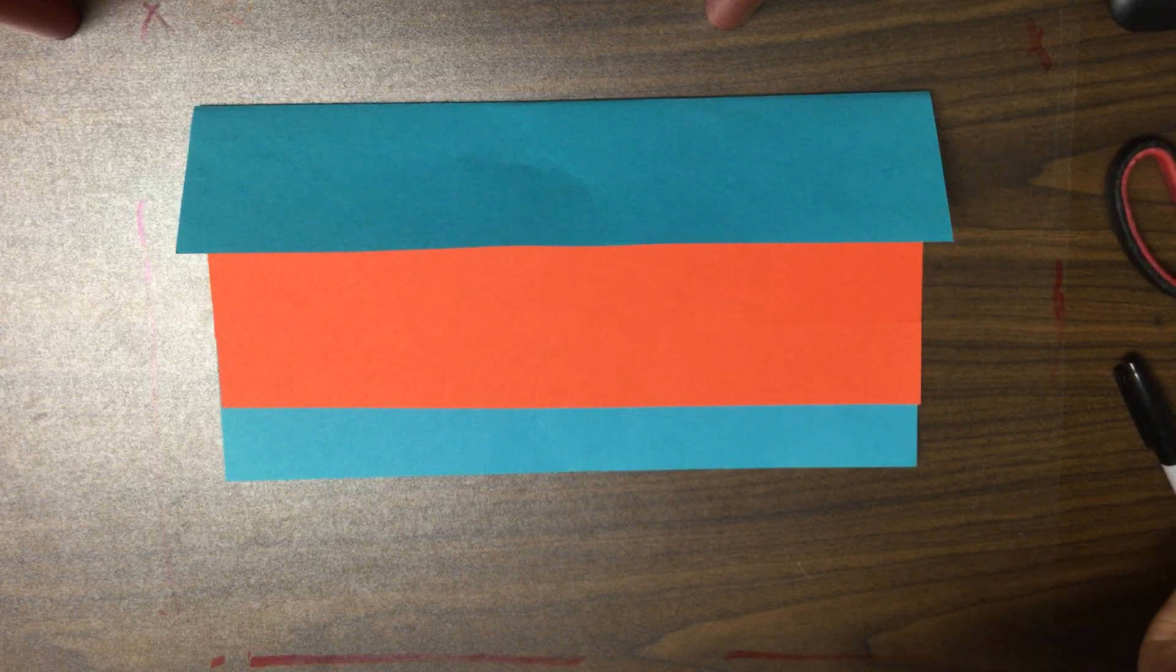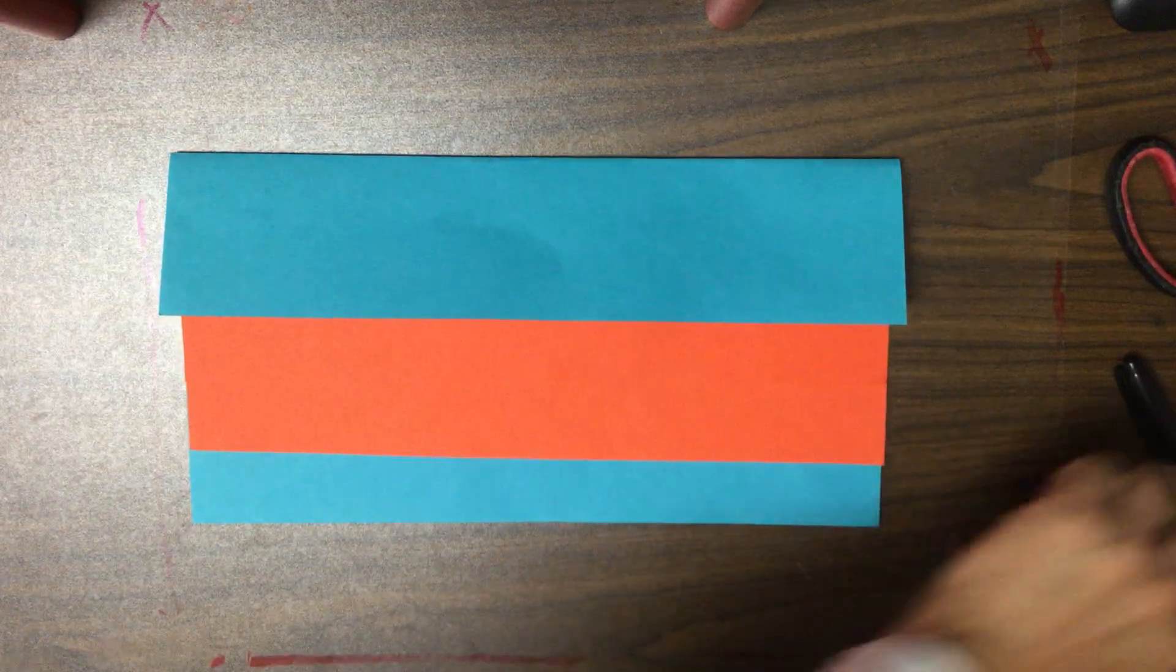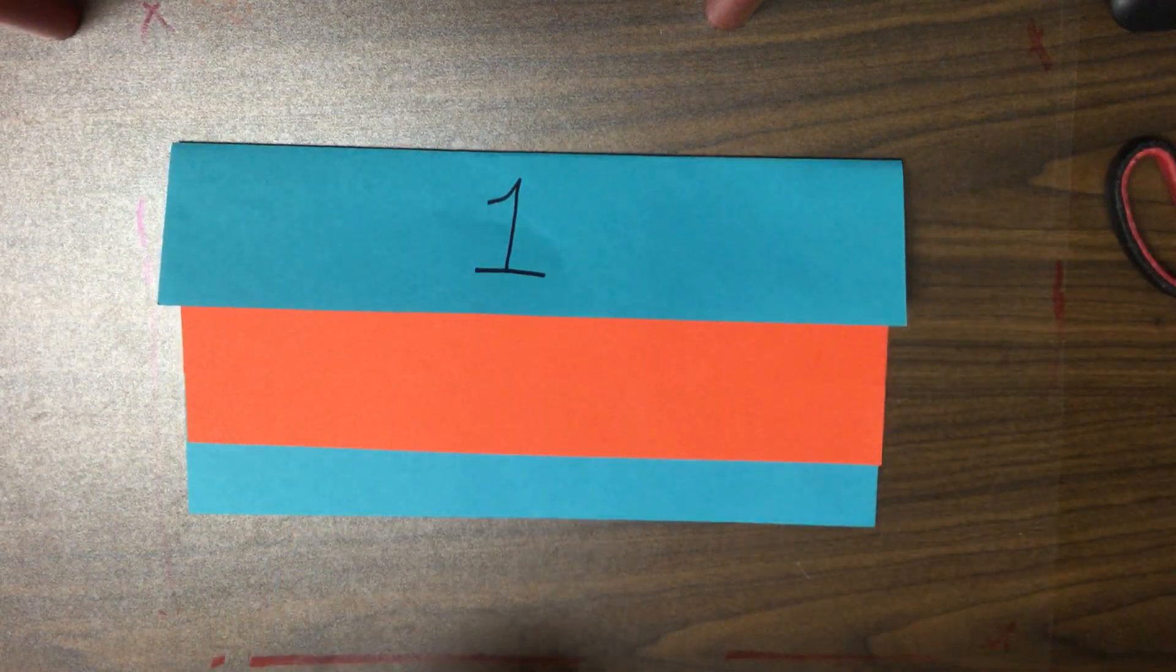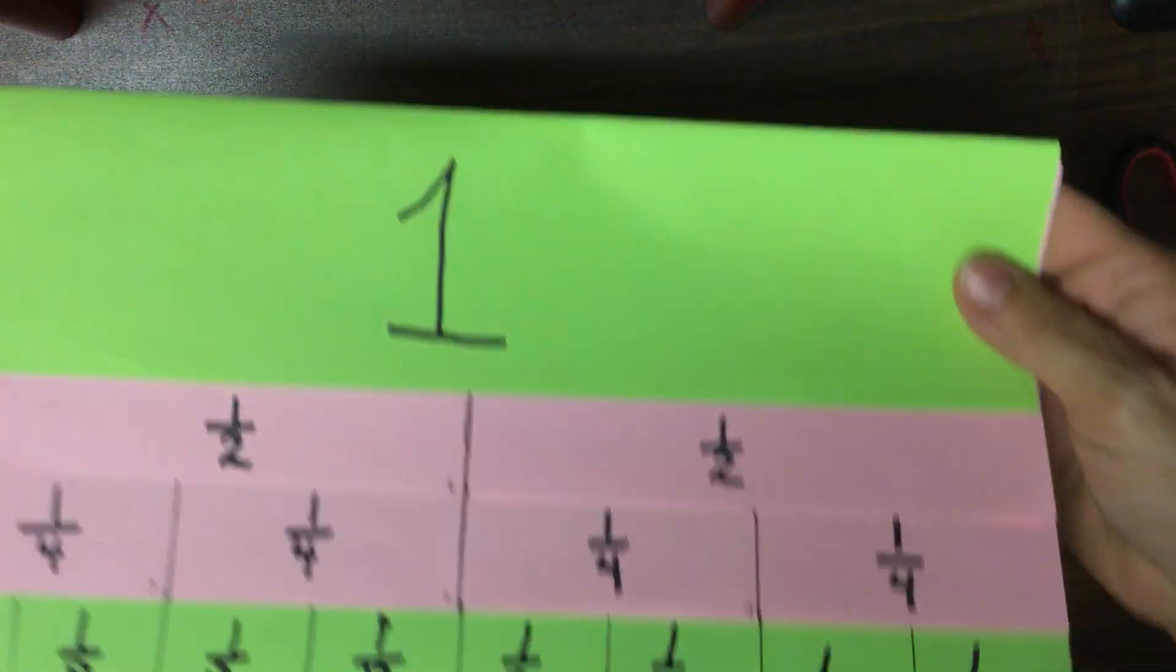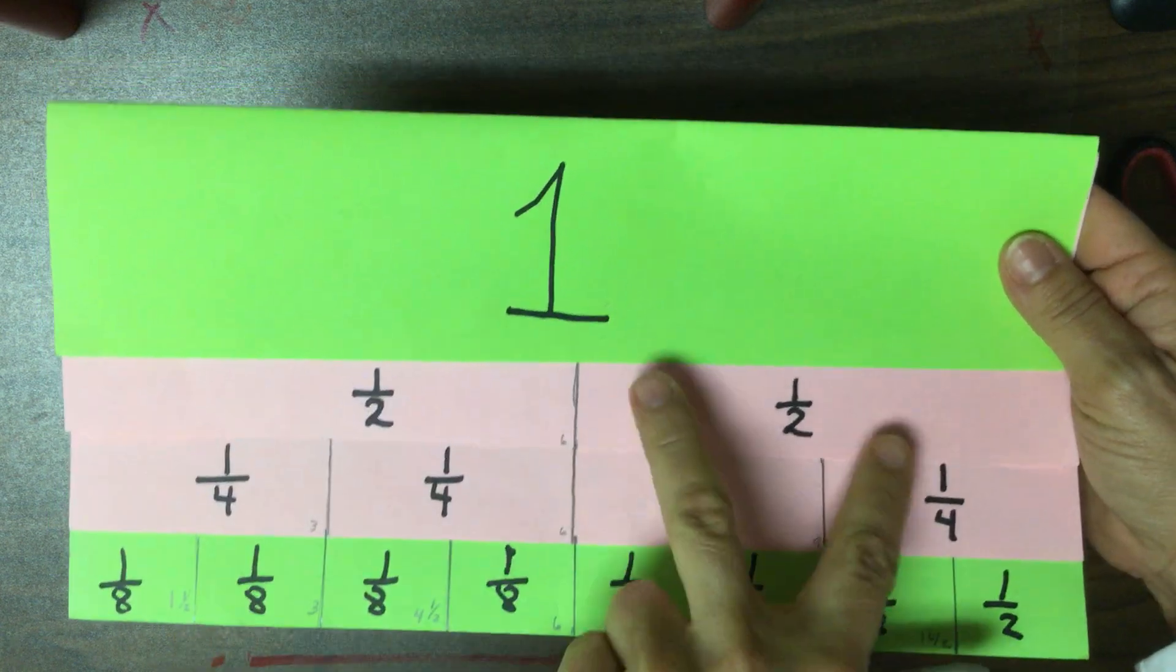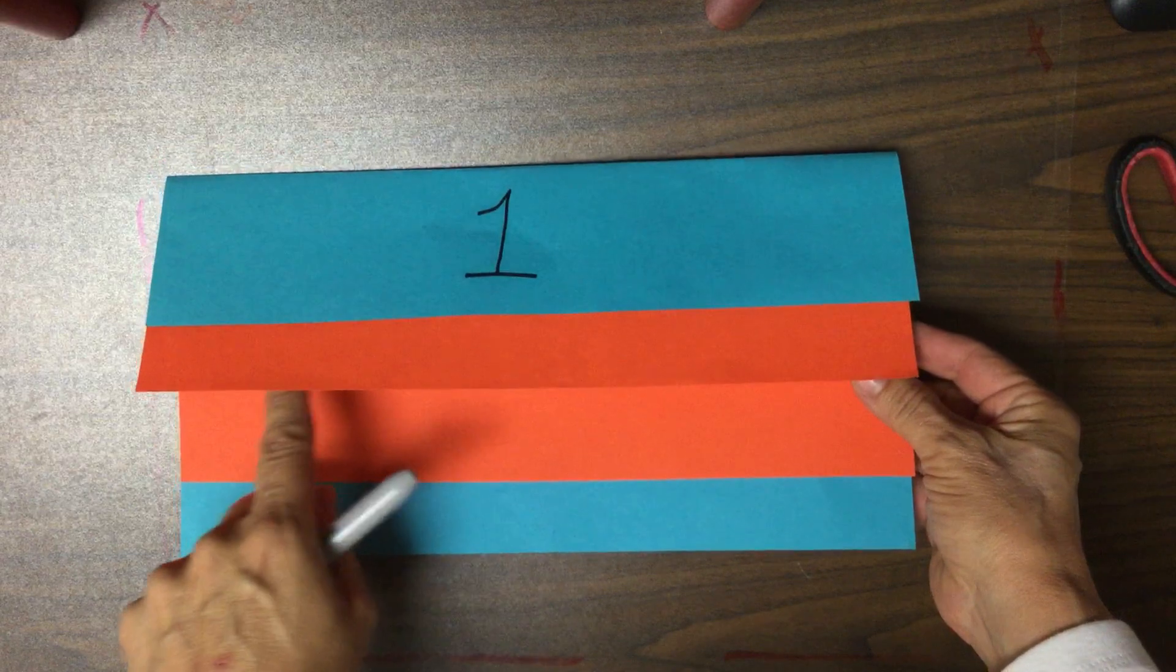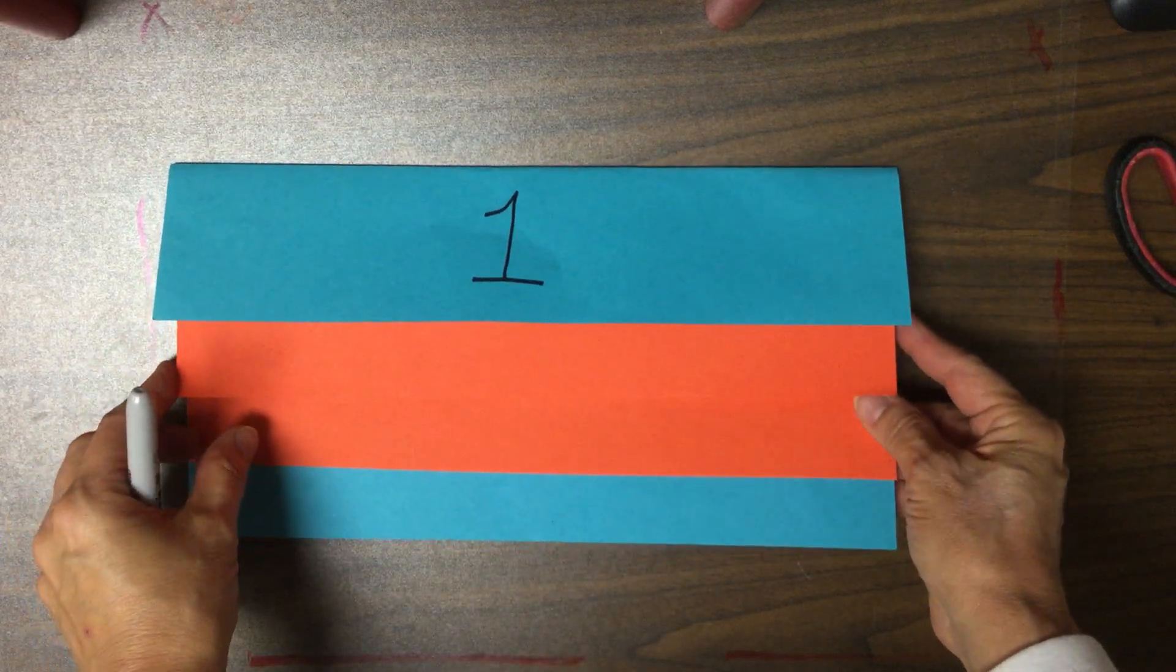Okay, so we're going to label this first one the same way. This first one represents one whole. So, we're going to put a big one here. Now, in the half flip book, we divided the first strip into two equal parts so that each one was one half. On this one, we are going to divide this first flip into three equal parts so that each one is one-third.